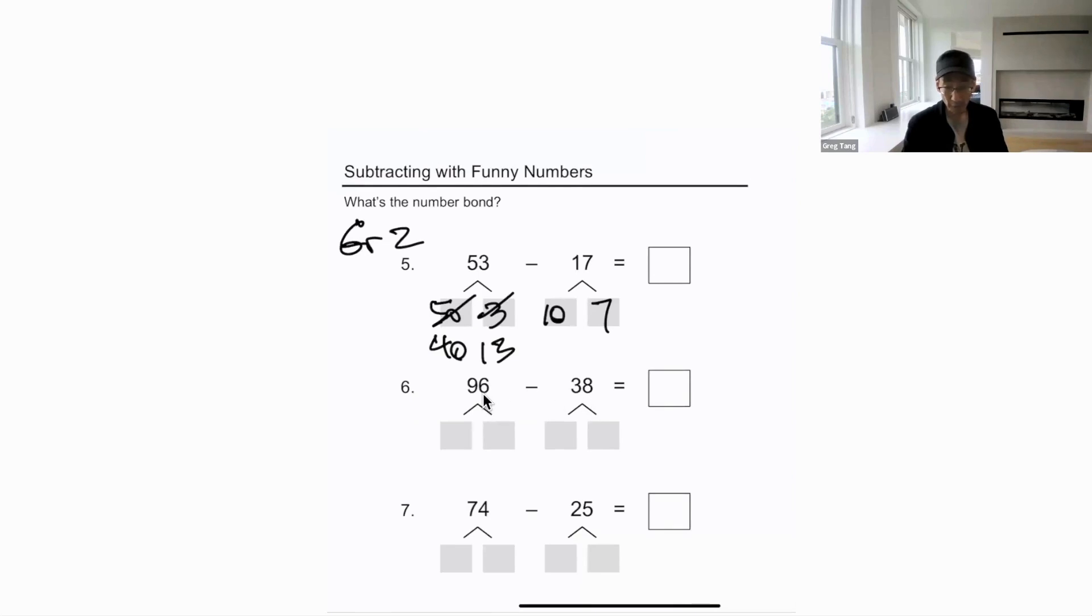So, you look at this one, and over time, the kid starts to check what? The ones. Do you have enough ones? No. What do you need instead of 90 and 6 if you don't have enough ones? I need 80, 16. Can you tell me the number bond for 74 since you're taking away 25? Everybody good with that?